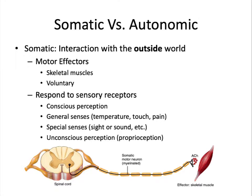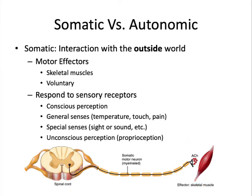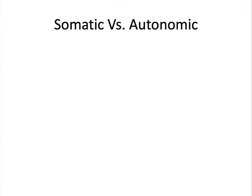Remember from our Divisions of the Nervous System lecture that the motor division is divided into somatic and autonomic divisions. The somatic motor division is comprised of skeletal muscles, which are the voluntary effectors that respond to input from the somatosensory division. These receptors tell the body what is going on with the outside world — for example, what you are hearing, seeing, or feeling. The autonomic motor division deals with the body's interaction with the inside world, and these responses are mostly involuntary.